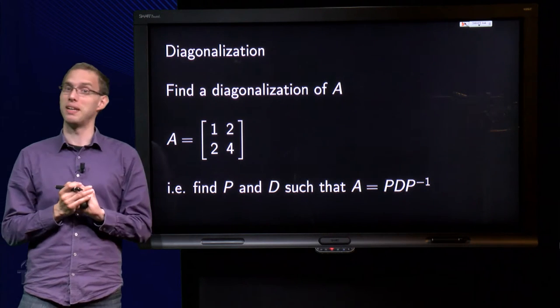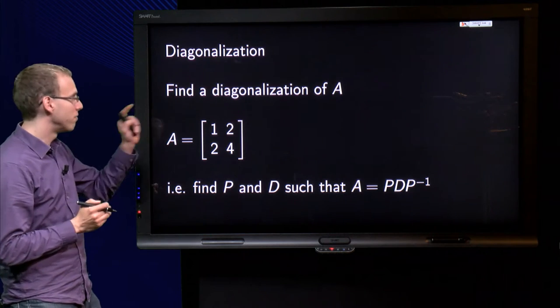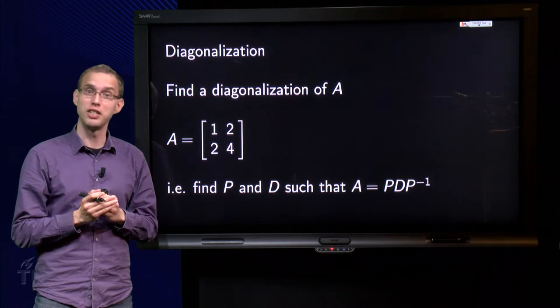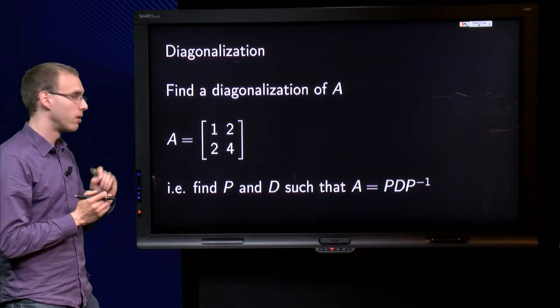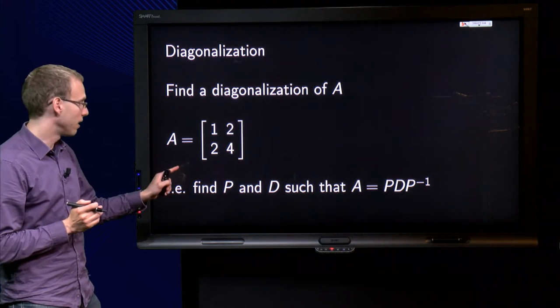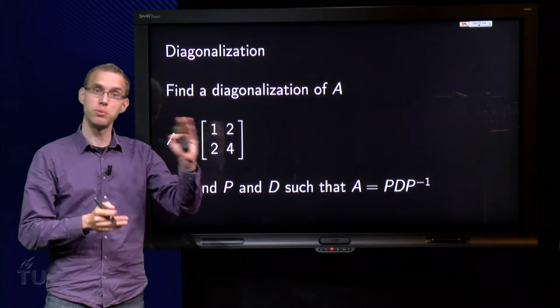We have given a matrix A, the question is find a diagonalization of A if this is possible. So, can we find matrices P and D such that A equals P times D times P inverse?